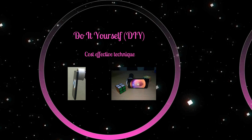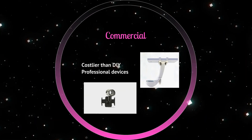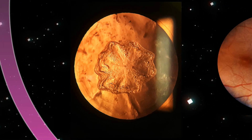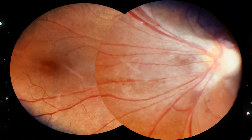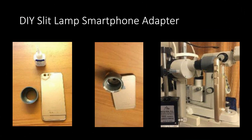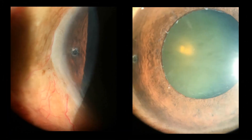Both the do-it-yourself and commercially available adapters are capable of capturing good quality images for the anterior segment, as in this montage of aggressive retinopathy of prematurity with temporal drag of macula and vessels. This is a do-it-yourself slit lamp smartphone attachment made from commonly available material, making it a cost-effective option. It is attached to the back cover of the phone and the entire assembly is fixed to the eyepiece of the slit lamp. These are a few of the anterior segment images taken with the smartphone.